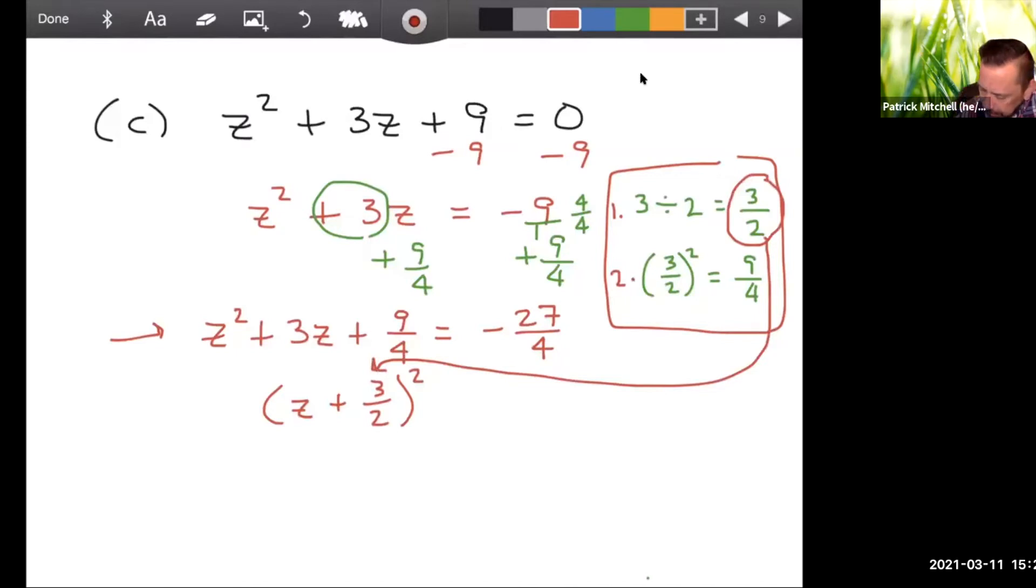And in the next example, alright, so z plus 3 halves squared equals negative 27 over 4. Now I'm going to use my square root property. Z plus 3 halves must be the positive or negative square root of negative 27 over 4. So one thing I'm kind of happy about, it's very easy to rewrite. Well, let's do this first. Square root of negative 27 over 2, right? Because the square root of 4 is 2.